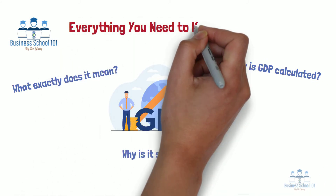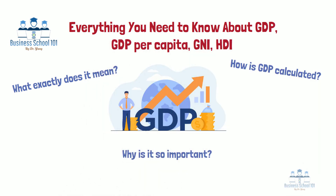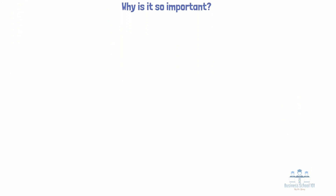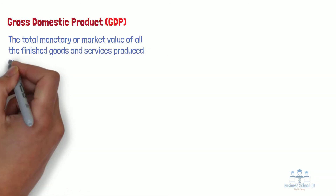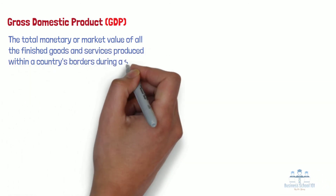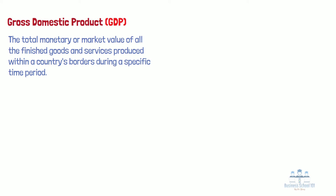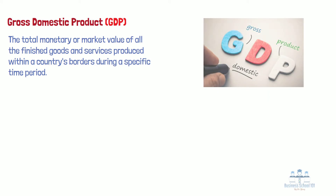In addition, I will introduce three other indicators that are also frequently used to evaluate and compare the economic development of various countries. Now, let's start with GDP. Gross domestic product, or GDP, refers to the total monetary or market value of all the finished goods and services produced within a country's borders during a specific time period. Economists use GDP to measure the relative wealth and prosperity of different nations as well as to measure the overall growth or decline of a nation's economy.